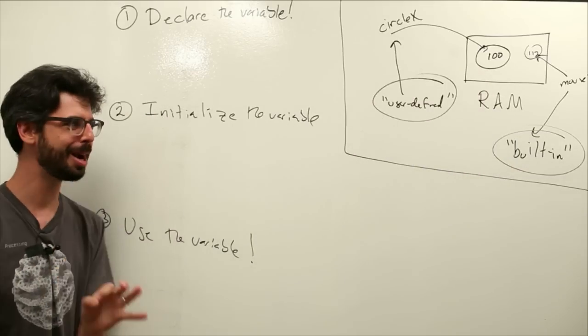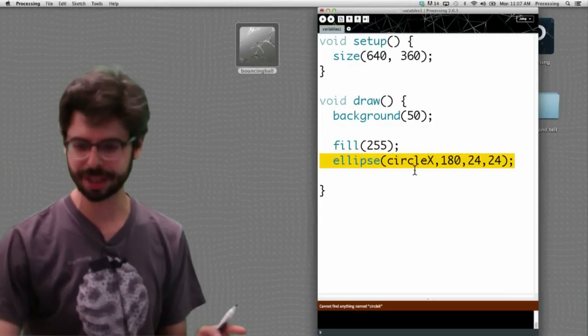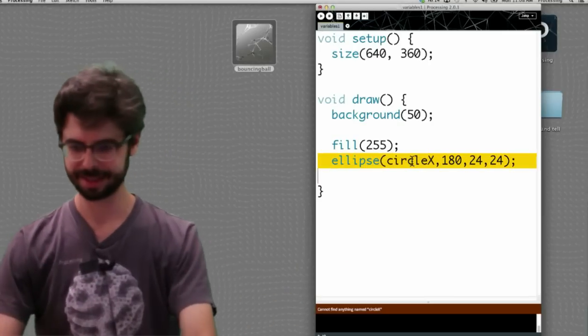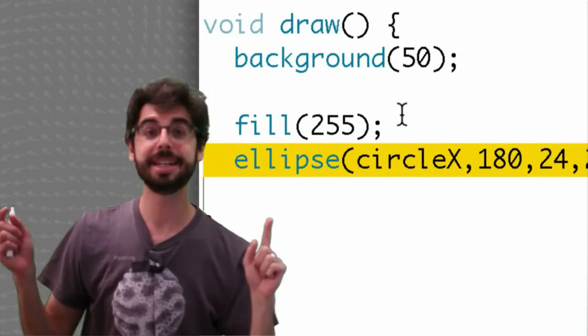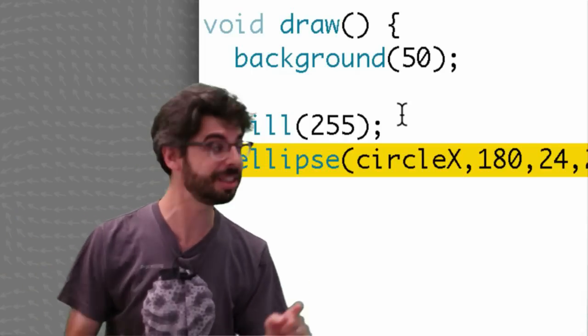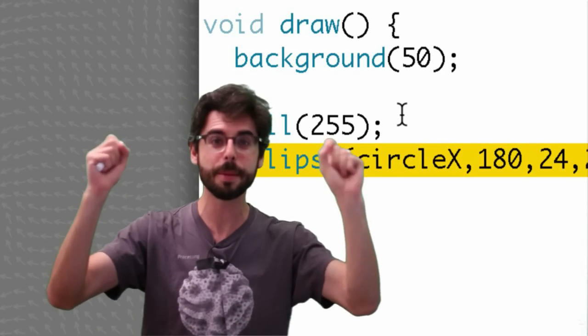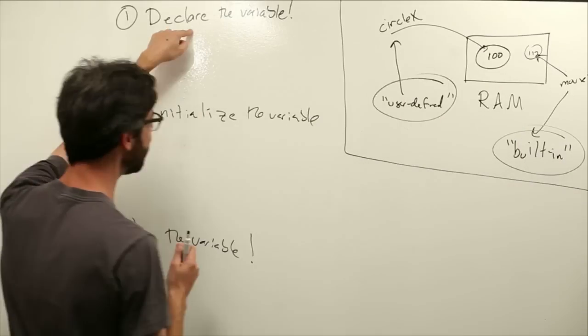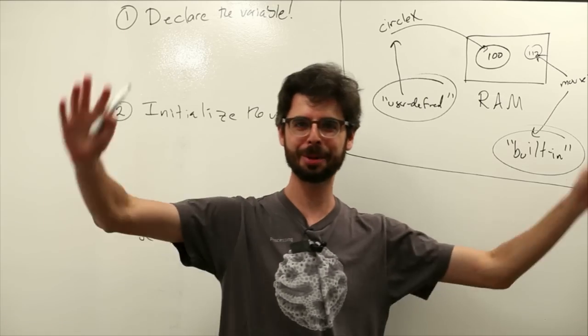We're doing this very slowly, right? We know we want, eventually, to be able to do something like this. To draw our ellipse at circle x. Draw our ellipse at circle x. And, circle x is our variable. This is, in a way, step three. This is using the variable. But we missed the two important steps we need if we're using the variable. We missed declare and initialize. So, how do we, let's start with declare. How do we declare a variable?